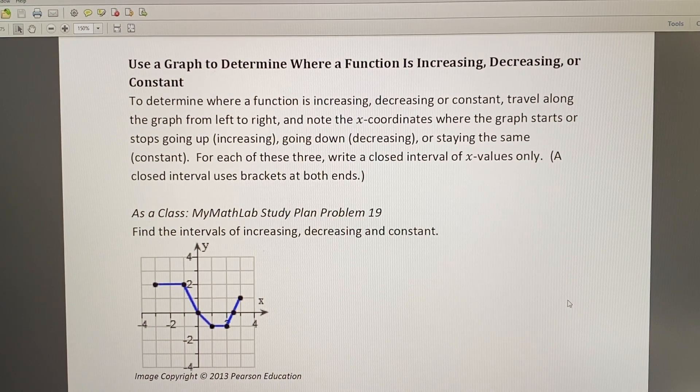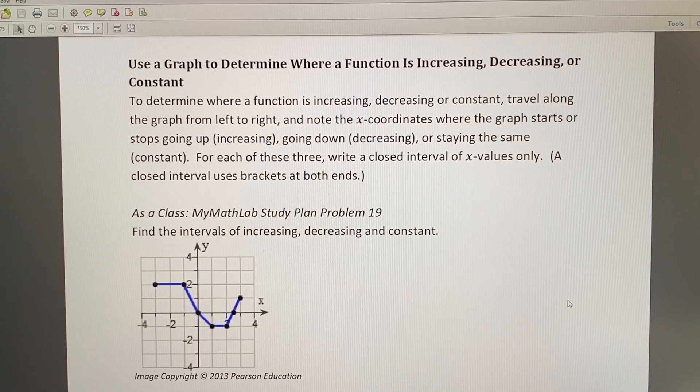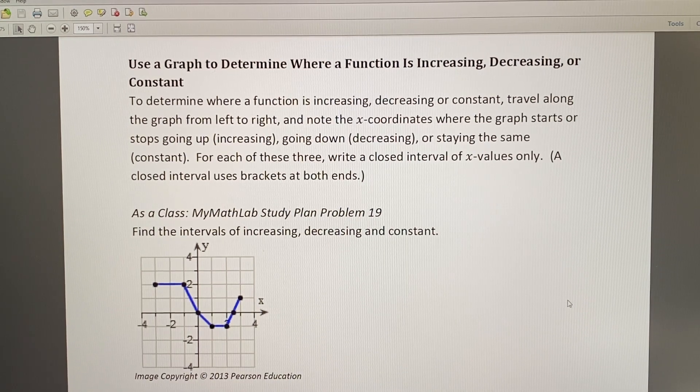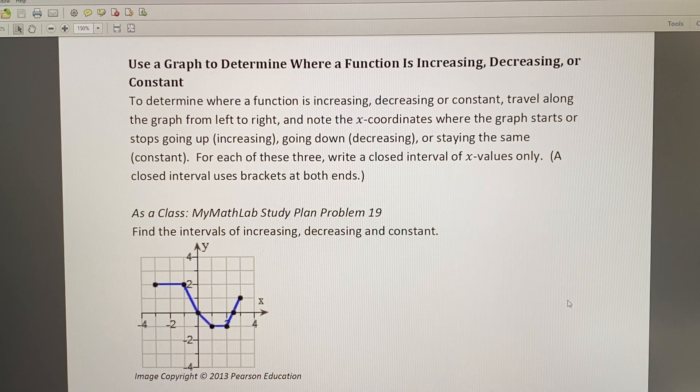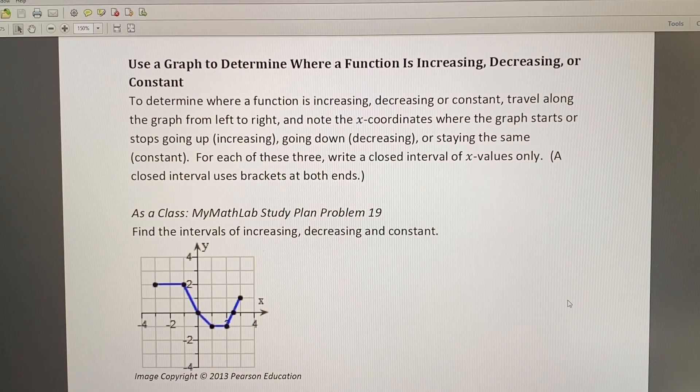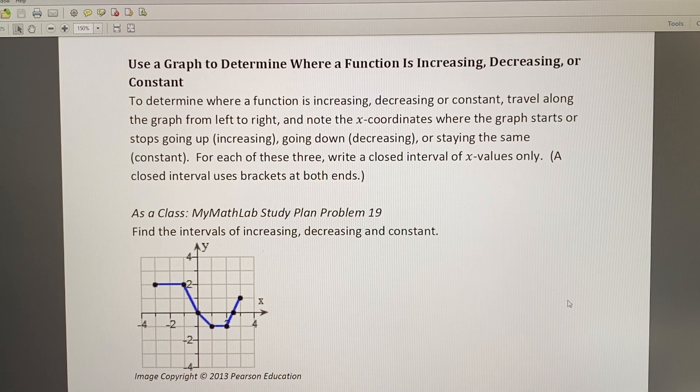Let's think about those very important words near the end of that sentence. First of all, interval. That means a smallest number, then a comma, then a largest number. Closed means that we are going to use brackets at both ends. X values only means that both numbers are x values.